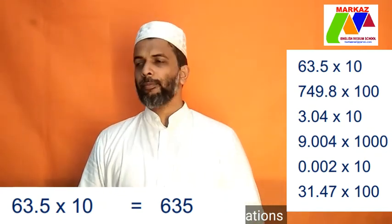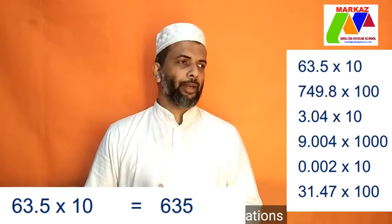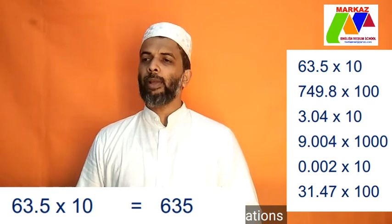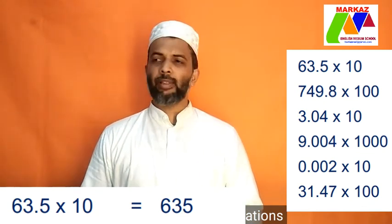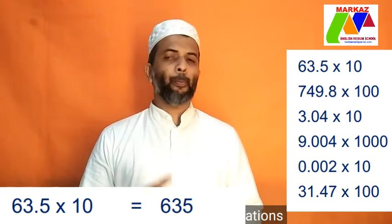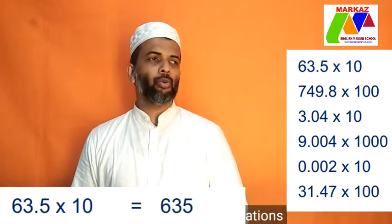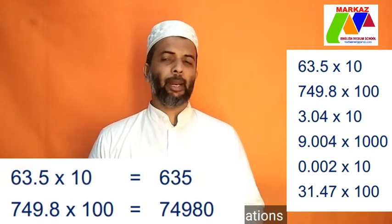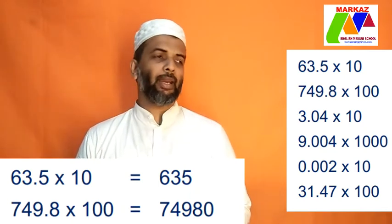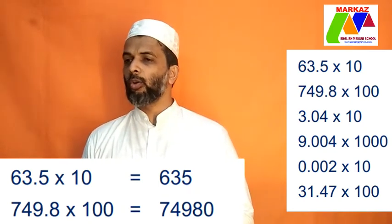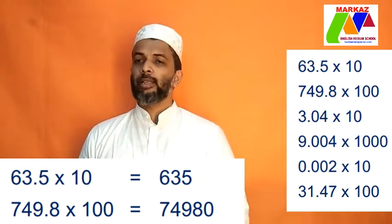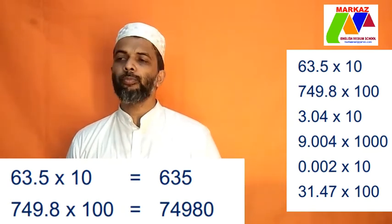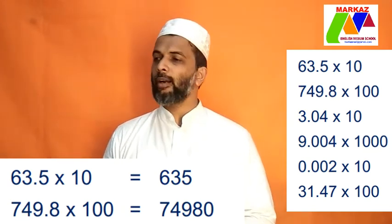In the second one, 749.8 into 100. When multiply with 100, you have to move two places after the decimal number to before the decimal number. 749.8 into 100 is equal to 74980.